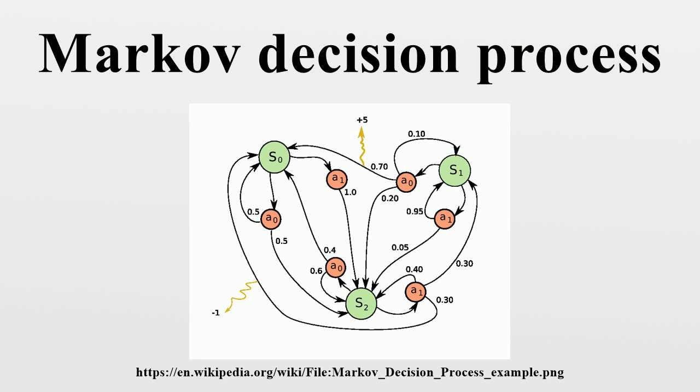The probability that the process moves into its new state is influenced by the chosen action. Specifically, it is given by the state transition function. Thus, the next state depends on the current state and the decision-maker's action. But given these, it is conditionally independent of all previous states and actions. In other words, the state transitions of an MDP satisfy the Markov property.